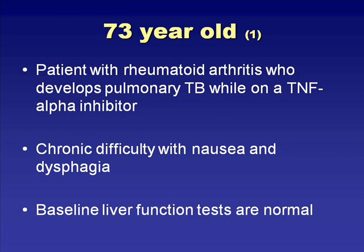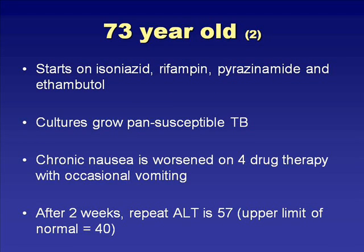The first case is a 73-year-old patient with rheumatoid arthritis who developed pulmonary tuberculosis while taking a TNF-alpha inhibitor. Her past history was significant for chronic difficulty with nausea and dysphagia, but her baseline liver function tests were normal. She was started on isoniazid, rifampin, PZA, and ethambutol, and her cultures grew pan-susceptible tuberculosis. Her chronic nausea worsened on four-drug therapy, and she reported occasional vomiting. Two weeks into therapy, her ALT was repeated and was 57, with the upper limit of normal being 40.